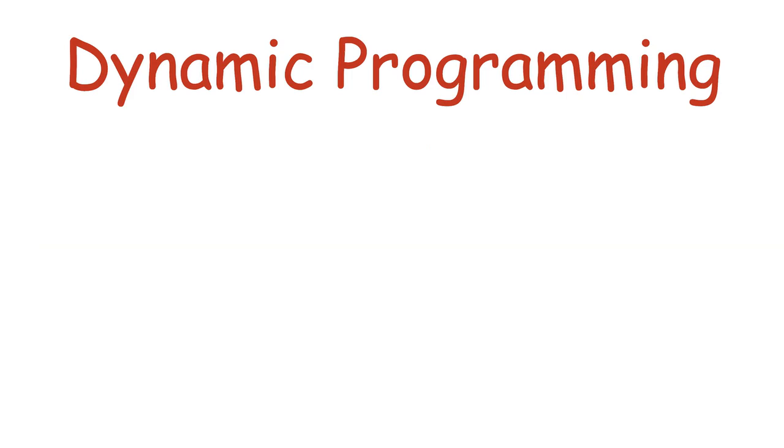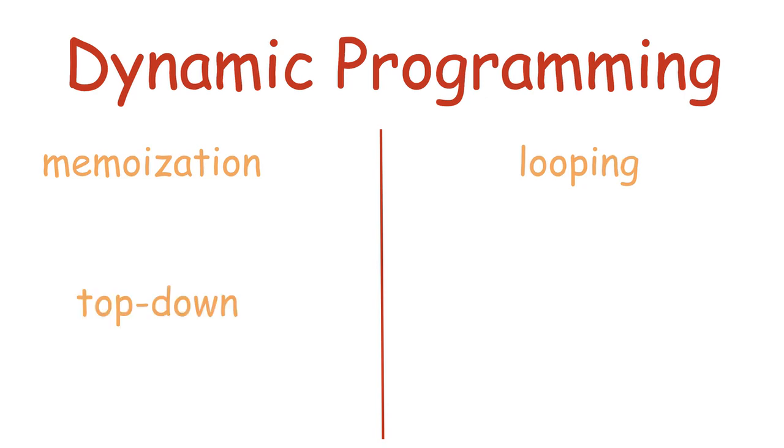There are two main methods for achieving that goal. Memoization and looping, also known as the top-down and the bottom-up approaches. They both achieve the same goal, preventing redundant computations, and they do equally well at it, but they differ in the way of thinking.